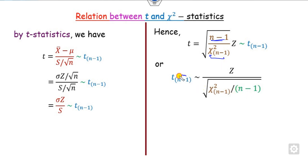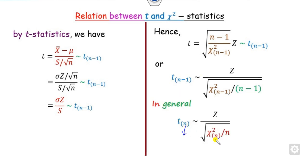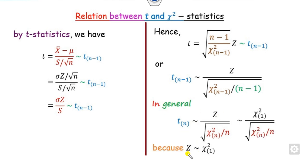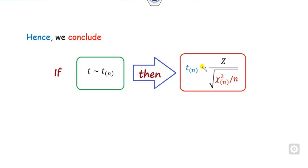Looking closely at the resulting expression, this part is n minus 1 and this part is independent of n. Writing this in general form by replacing n, we get: this is the T statistic, this is the chi-square distribution, and this is the standard normal variate. We also know that z-squared is chi-square with 1 degree of freedom. So we can write this with chi-square with 1 degree of freedom, meaning the value of z is simply the square root of the chi-square term. This gives us the relation between chi-square and T-squared.